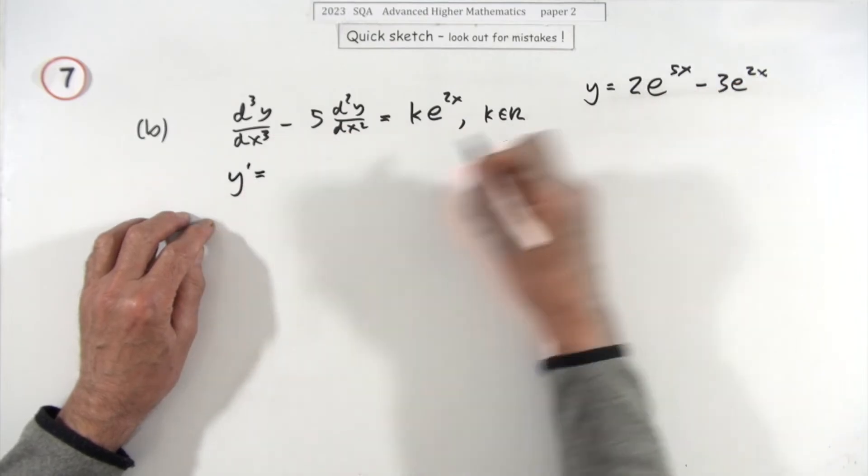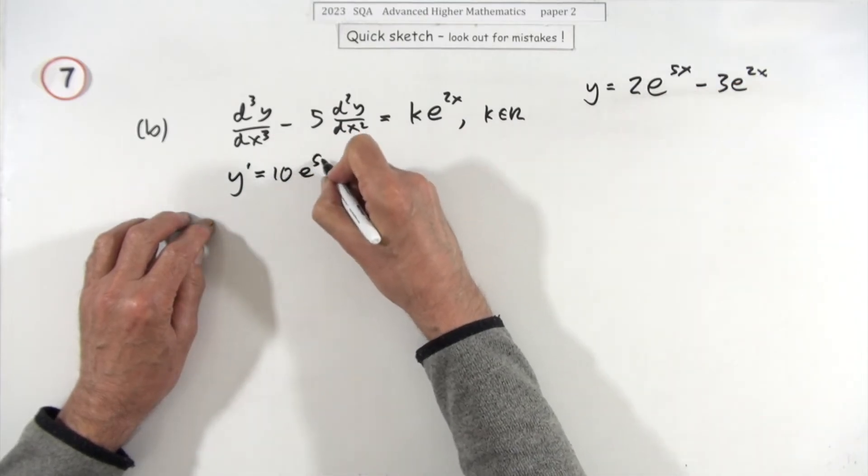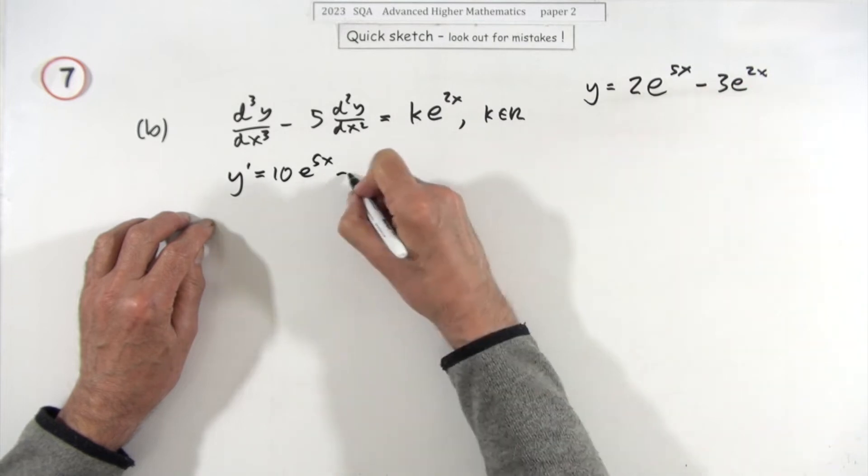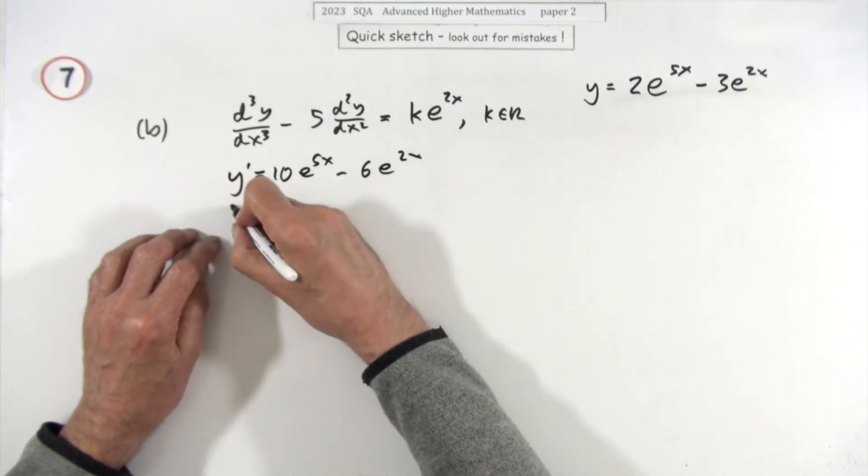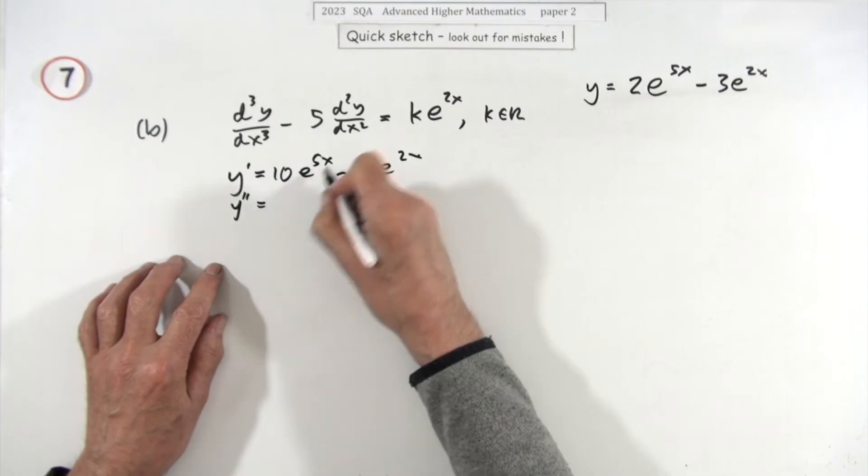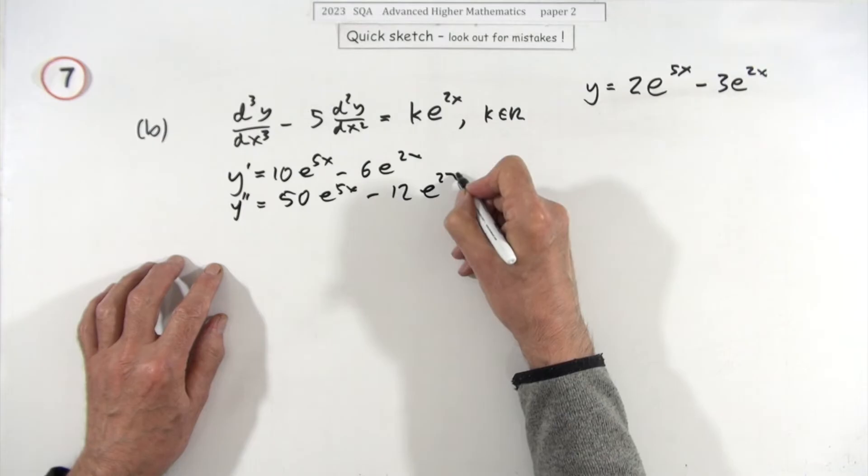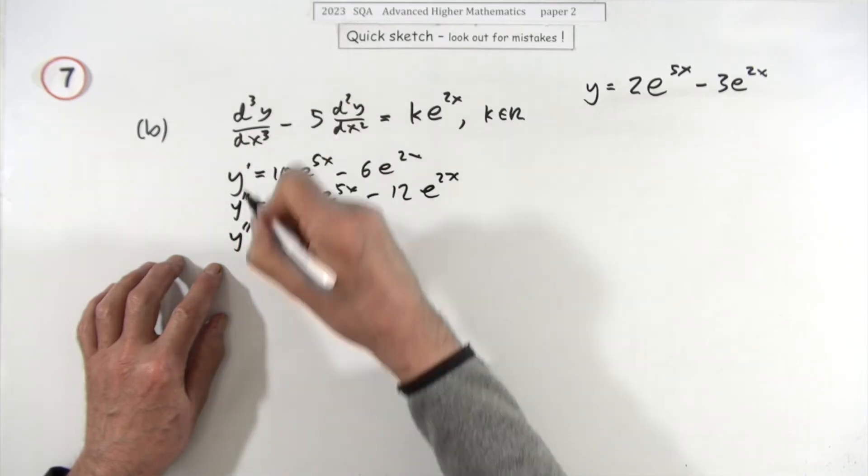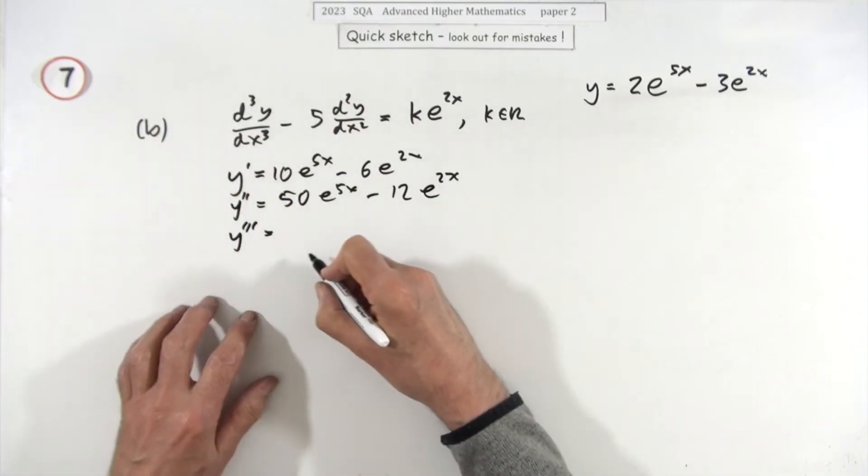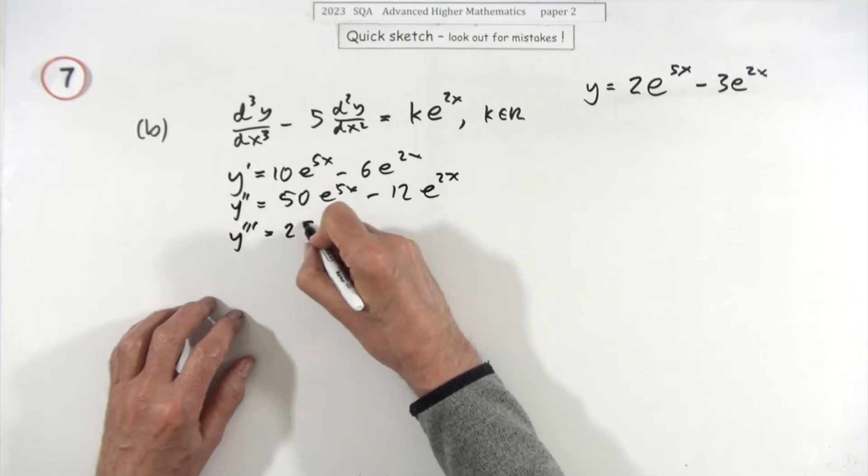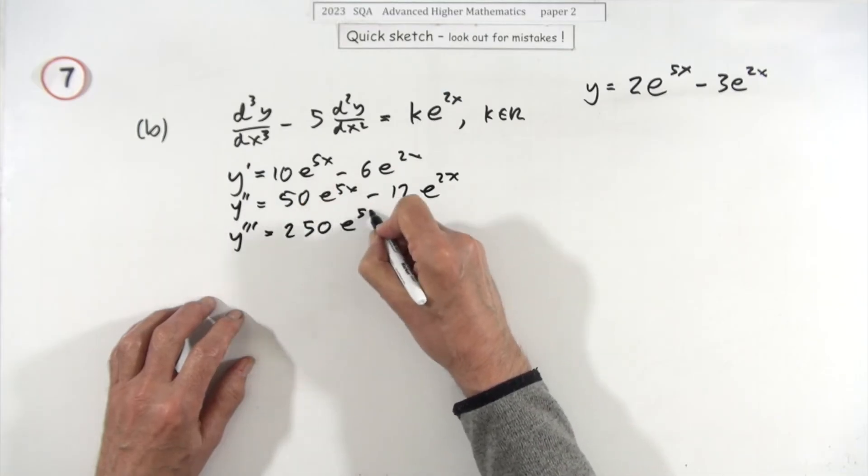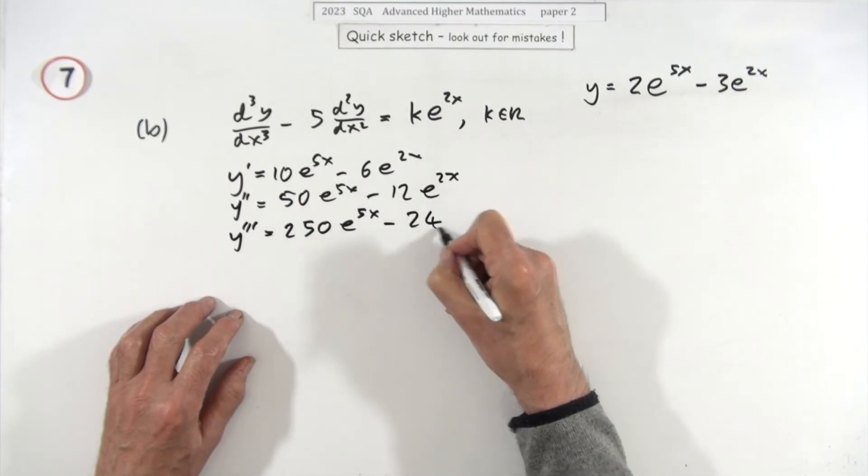So the first derivative would be five twos are 10e to the 5x, two threes are 6e to the 2x. Next derivative: 50, we're up to e to the 5x, 12e to the 2x. The third one, which is the one I need the most, is 250e to the 5x minus 24e to the 2x.